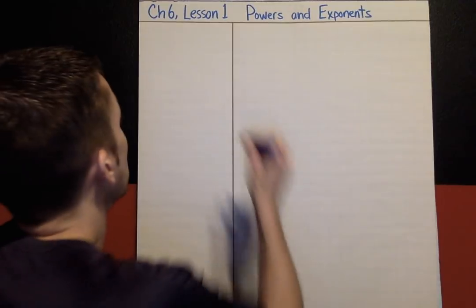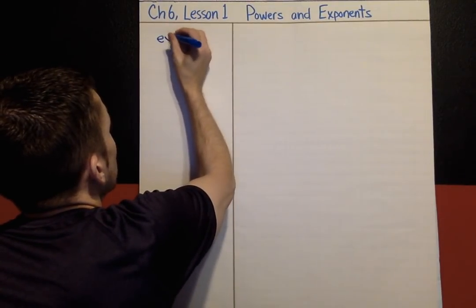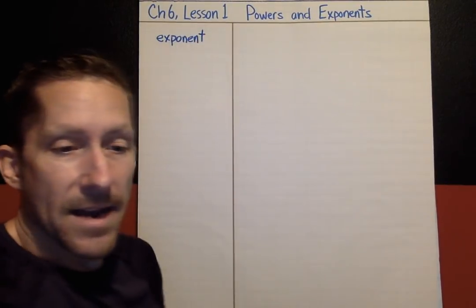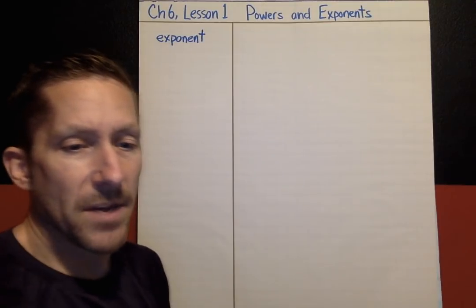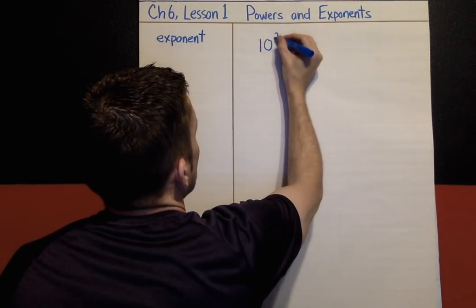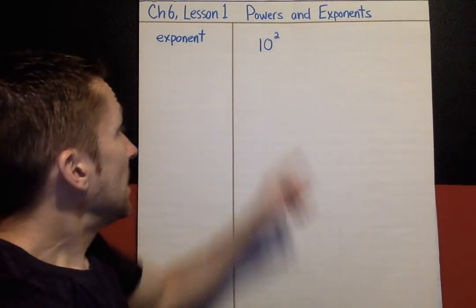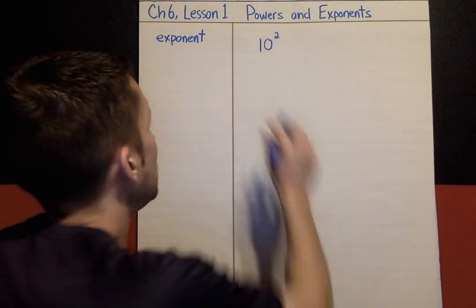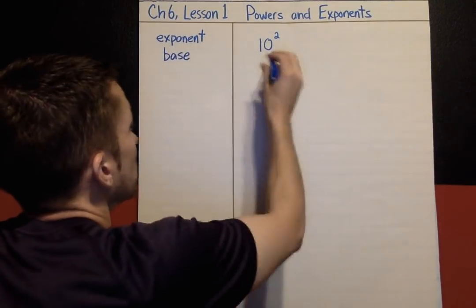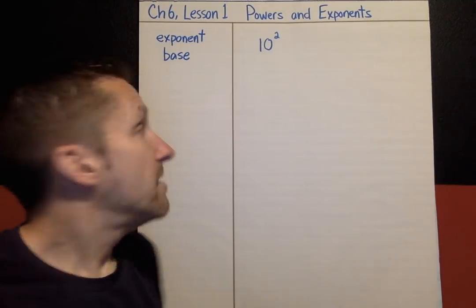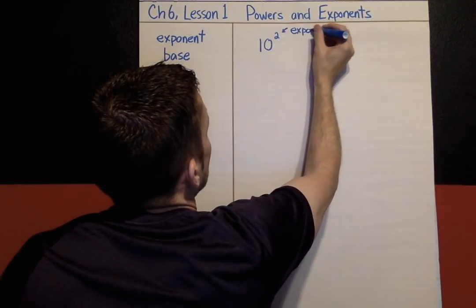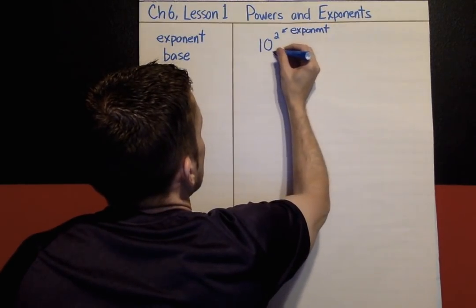Exponent is the very first keyword we're going to talk about. An exponent is a little raised up number next to another number. For example, 10 with the little raised up 2. That raised up 2 is an exponent, and the 10 is called the base, the base number. So the exponent is the little raised up number. This is the exponent. This is the base.